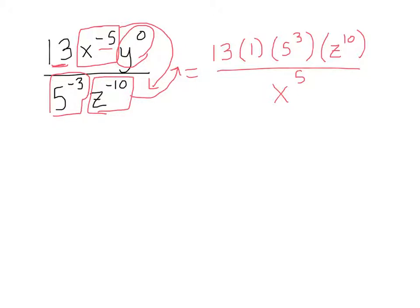Now, are all the exponents in what I have left positive? They are. So now we're going to simplify. Use your calculator to tell you what 5 cubed is. It's 5 times 5 times 5, which I think is 125.